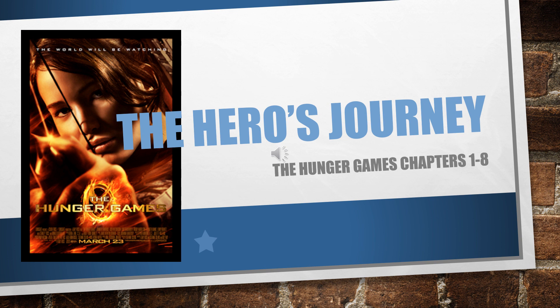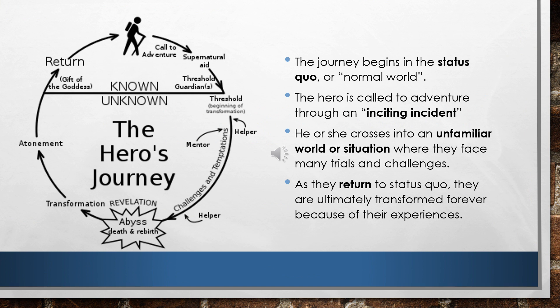Let's take a look at the hero's journey in the Hunger Games chapters 1 through 8. From our Percy Jackson unit we already know that the hero's journey begins and ends in the status quo, or what we would consider to be the normal world. Our hero is first called to adventure through an inciting incident, which is an event that pulls our hero out of the norm and into this new journey or adventure. He or she crosses into an unfamiliar world or situation and this is where they face their trials and challenges along the way. As they return to status quo at the end of the story, ultimately they're transformed forever because of their experiences.